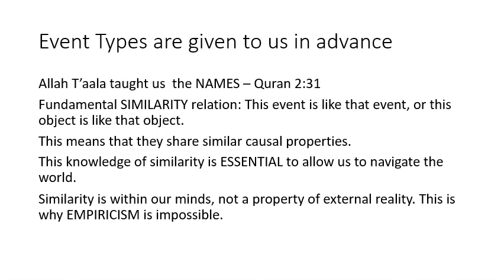The answer to this is given in the Quran — Allah taught Adam the names of things, which means also that this knowledge was transferred to the progeny. It's built into us. The names are basically the idea that the type of object is known to us in advance. If we know that this is a table, there is a whole type. This type doesn't exist in the world — in the real world we only have one table and another table, all unique and distinct. But the categorization that all these things belong to the same type is done by our minds. And the same type means that they have the same causal properties. So when we see some object being able to do something, we can infer that similar objects will also be able to do similar things.